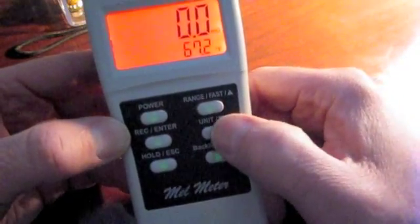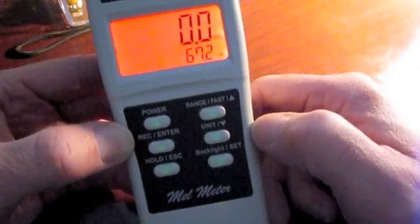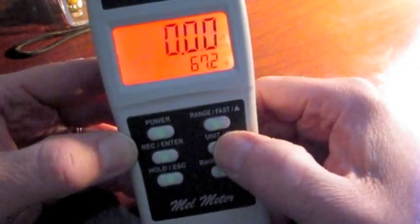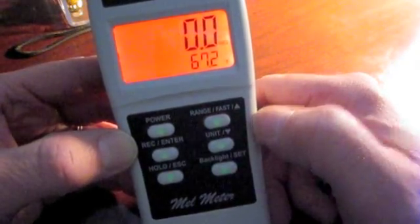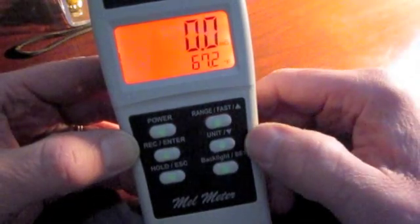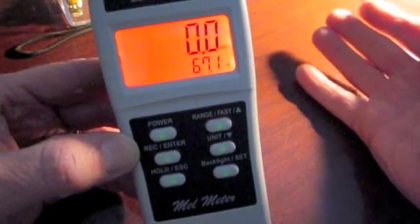Stepping on down to the next button on the right, we have a unit button. The unit button helps you to select whether you want to read micro Tesla, which is more of a European engineering unit, or milligauss, which is our U.S. equivalent. It's basically an engineering unit of measure.